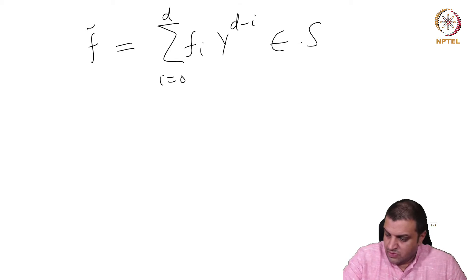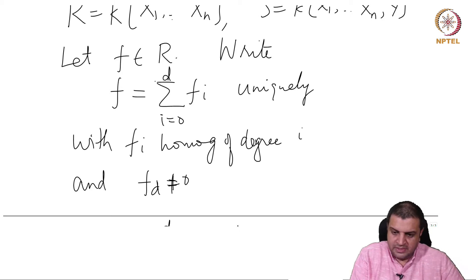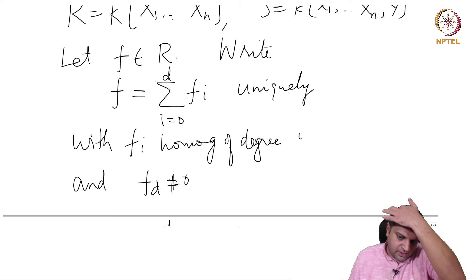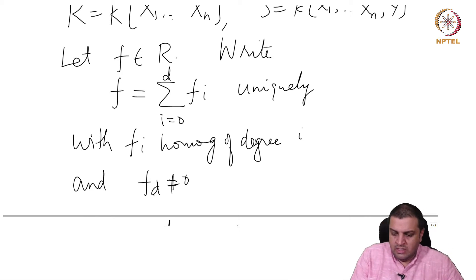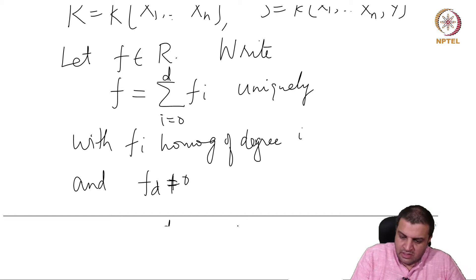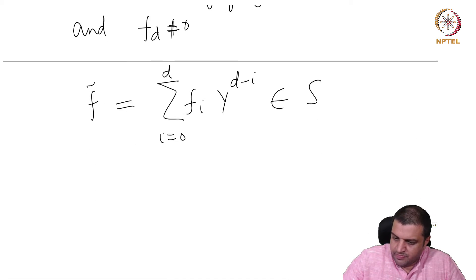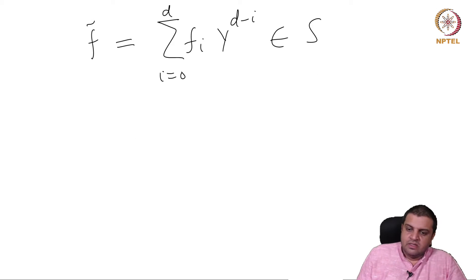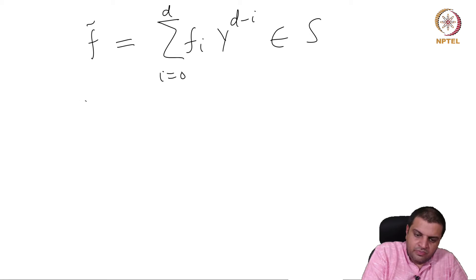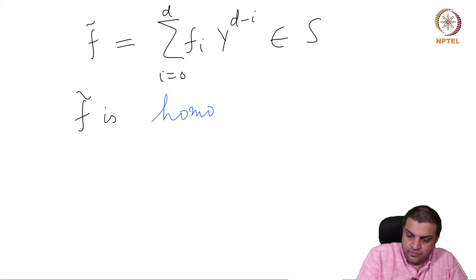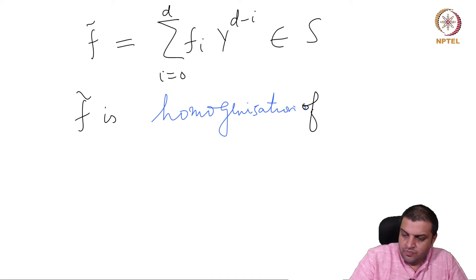This is an element of S. We start with an element of R, split it into its homogeneous components where d is the degree of the highest nonzero component, and write it like this. f̃ is called the homogenization of f with respect to y.